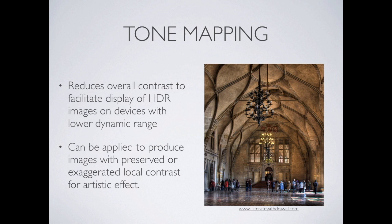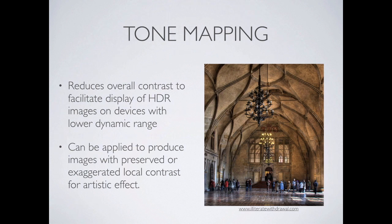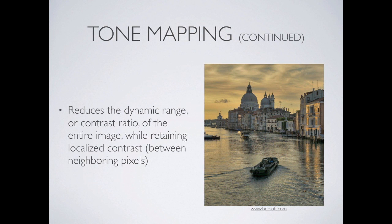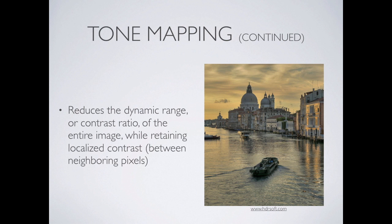It can produce images that look the way the scene looked, or it can produce images that are far beyond what the scene looked like and get more into the artistic realm. What it does is reduce the dynamic range or contrast ratio of the entire image while retaining localized contrast. We're selectively adjusting certain parts of the image — adjusting shadows so we can see light and dark within the shadows, and adjusting highlights so we can see light and dark within the highlights.